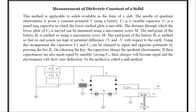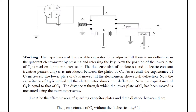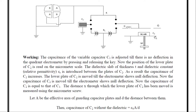This method is called the null method. Now we will see the working and theory of measurement of the dielectric constant of a solid. The capacitance of the variable capacitor C1 is adjusted until there is no deflection in the quadrant electrometer by pressing and releasing the key. In order to make it zero we vary capacitance C1 — this is the initial adjustment. Now the position of the lower plate of C2 is read on the micrometer scale.